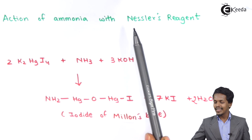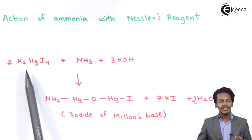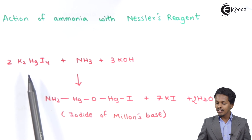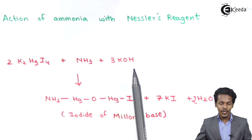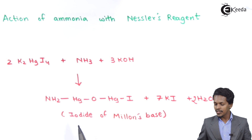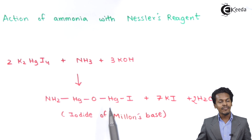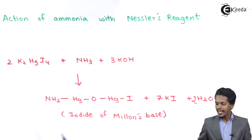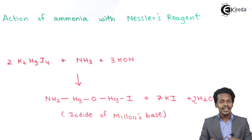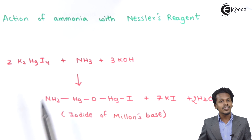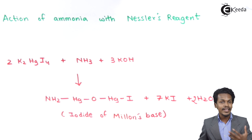The next reaction is the action of ammonia with Nessler's reagent, K₂HgI₄. When Nessler's reagent is treated with ammonia in a basic condition — in the presence of 3 moles of KOH — a compound called Iodide of Millon's Base, NH₂HgO·HgI, is produced as a brown precipitate, along with 7 moles of KI and 2 moles of H₂O as byproducts. The formation of this brown precipitate indicates the reaction has occurred.